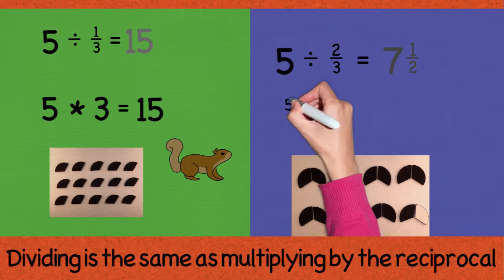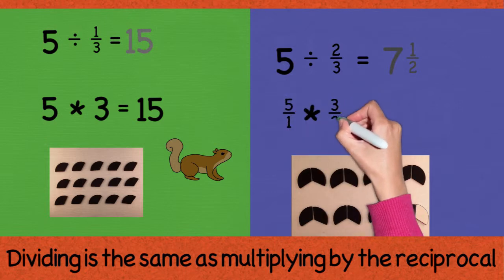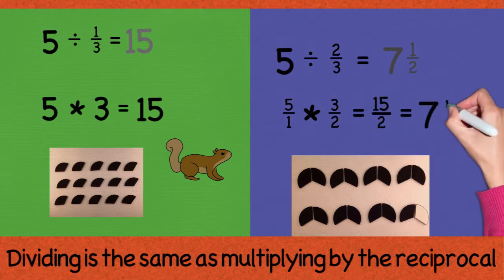Now let's look at 5 divided by 2 thirds. Well, the reciprocal of 2 thirds is 3 over 2. And when I multiply that, I get 15 over 2, or 7 and a half.